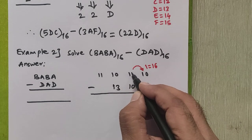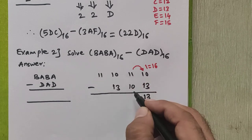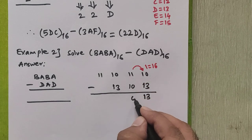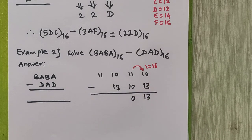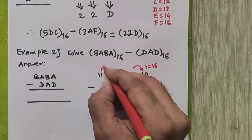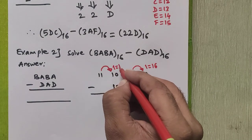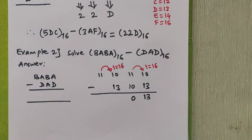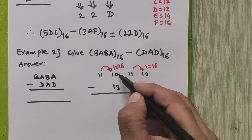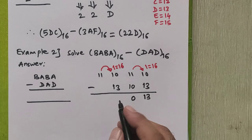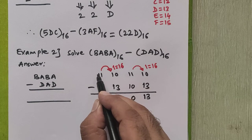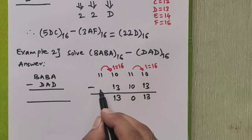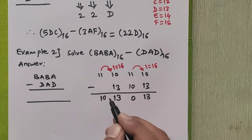We have taken a borrow from the next position, so that digit reduces to 10. Then 10 minus 10 is 0. Moving to the next column: 10 minus 13 is again not possible, so we take another borrow. 16 plus 10 is 26, and 26 minus 13 equals 13. Taking that borrow leaves the next digit as 10, and 10 minus 0 is 10.